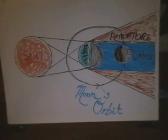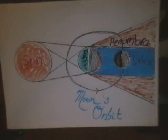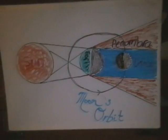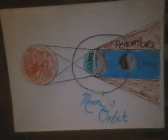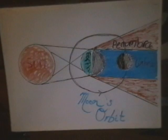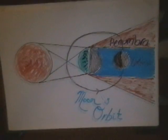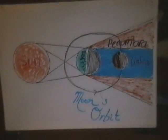A total lunar eclipse can only occur at full moon, when Earth blocks the sunlight normally reflected by the Moon. Some sunlight is bent through Earth's atmosphere, typically allowing the Moon a coppery glow. This diagram, not to scale, looks down on the solar system from above.